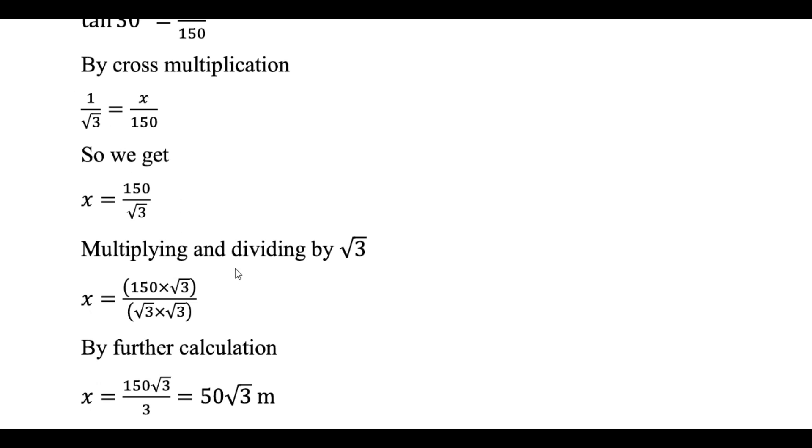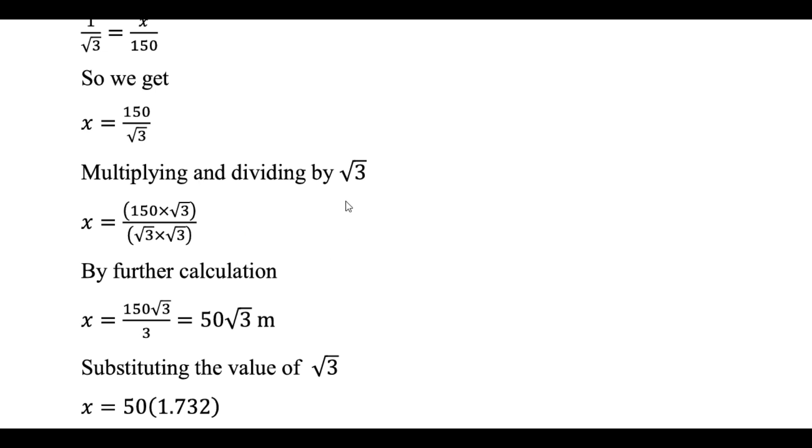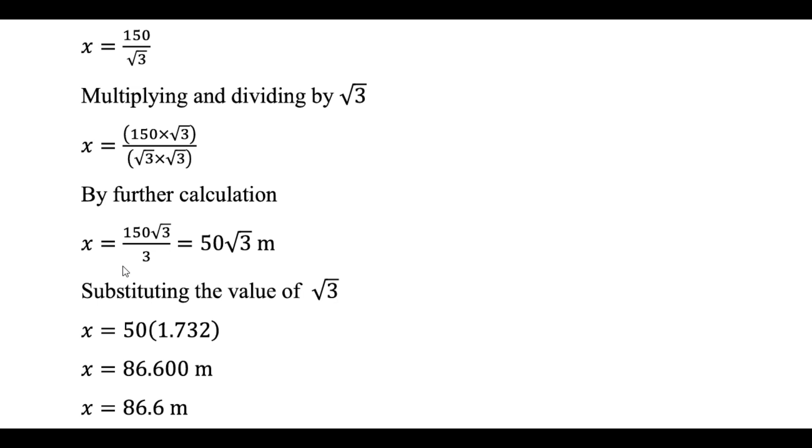By cross multiplication and dividing the numerator and denominator by root 3, you will get the value of x, that is 150 root 3 divided by 3, which comes to 50 root 3 meters.